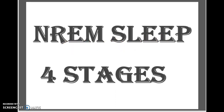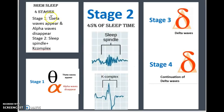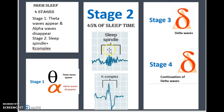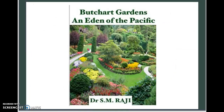When it comes to non-REM sleep, it is divided into four stages. In stage one, theta waves begin to appear and alpha waves begin to disappear. Stage two, which takes up over 45 percent of sleep time, features sleep spindles and K-complexes. In stage three, delta waves begin to appear, and stage four is a continuation of stage three with delta waves predominating.